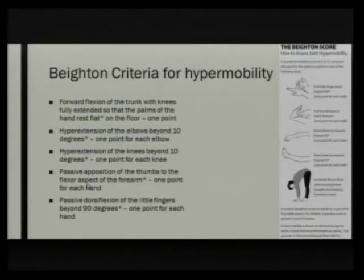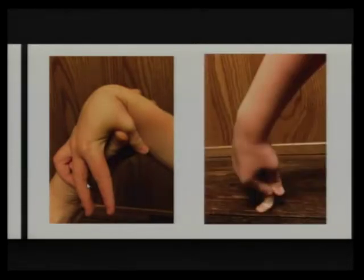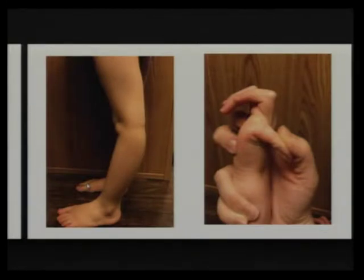In younger children or prepubescent adolescents, they tend to be more flexible, so they require six points rather than five. As you get older and stiffer from repetitive trauma or arthritis, they only require four. This is my three-and-a-half-year-old daughter's hand — you can see all of those joints extending backwards. That's her knees, and the pinky. She's three-and-a-half so I couldn't get her to bend forward with knees straight, but this is why I became interested in this disease process.